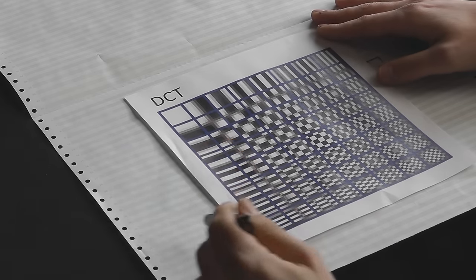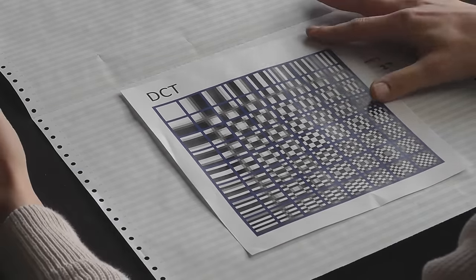To create any kind of 8x8 image, what we need to do is have a combination of all of these at the same time. Each of these is weighted based on something called a coefficient, which is a number representing the contribution of each of these individual blocks to the whole.